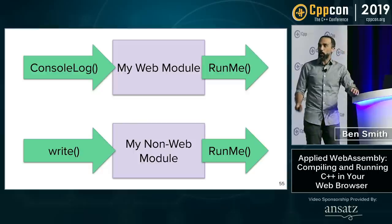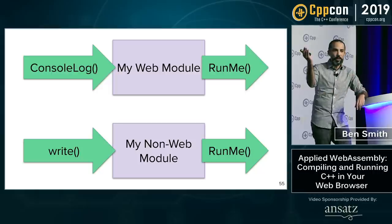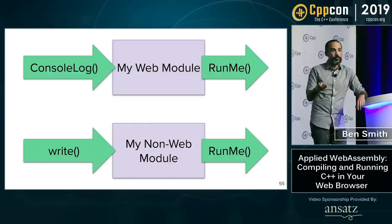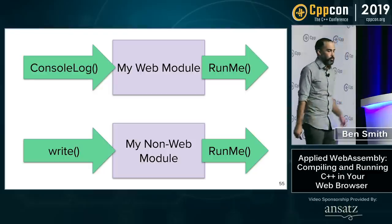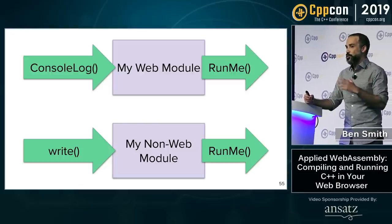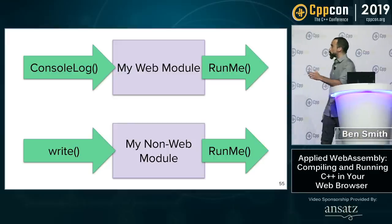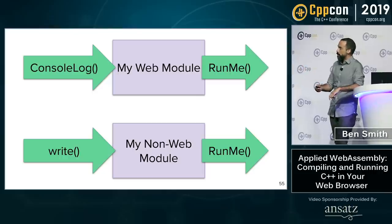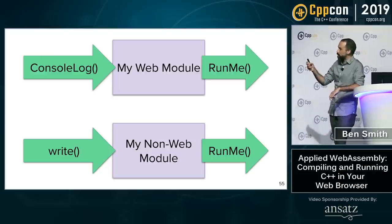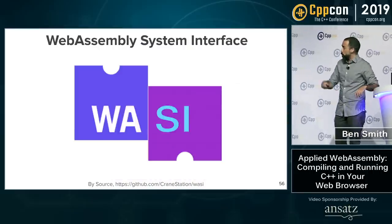This presents both a strength and a weakness. If you have a web module and a non-web module, you might need to provide different implementations — for example, console.log for web versus a write function for non-web. Theoretically these modules should run identically, but there's just no standard. One way to work around this is providing a shim. But what's better is to have some kind of standard — and that's actually what WASI is.